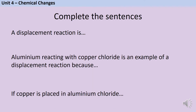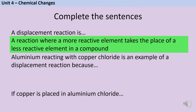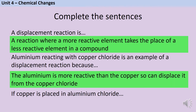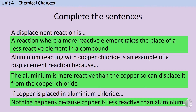Time for a progress check — pause the video and make sure you can write down the answer to each of these questions. A displacement reaction is a chemical reaction where a more reactive element takes the place of a less reactive element in a compound. The aluminium reacting with copper chloride is an example because aluminium is more reactive than copper, so it can displace it. If we place copper in aluminium chloride, nothing happens because copper is less reactive than aluminium, so it can't displace it.